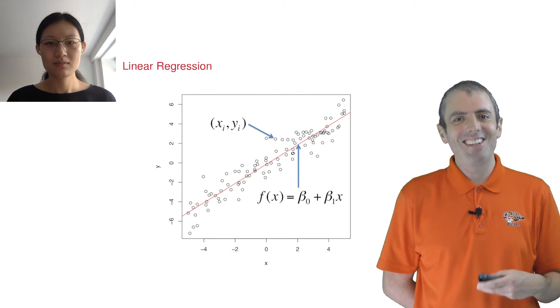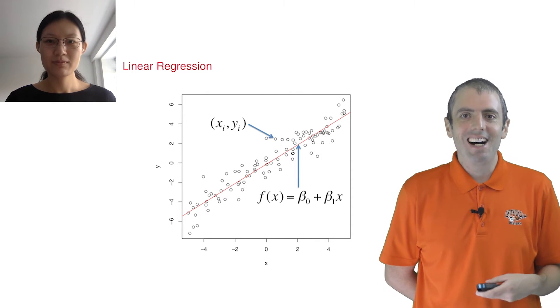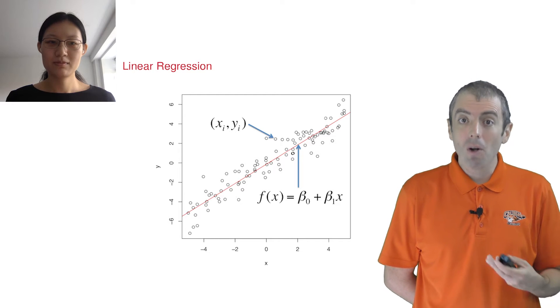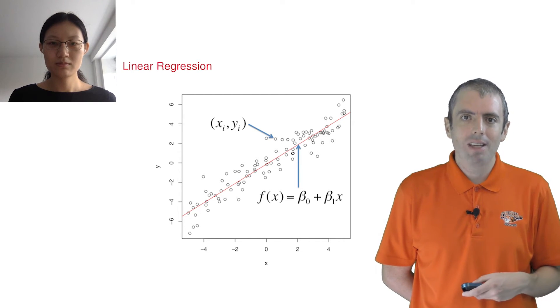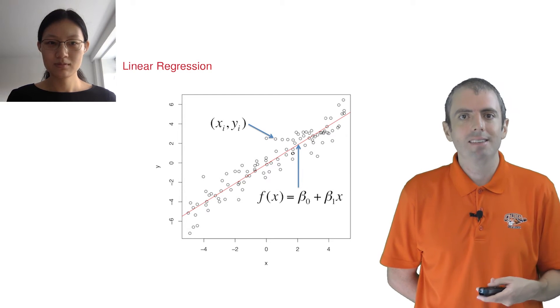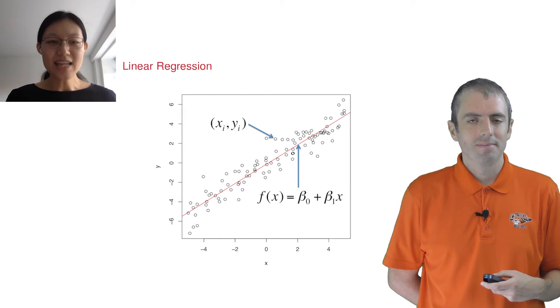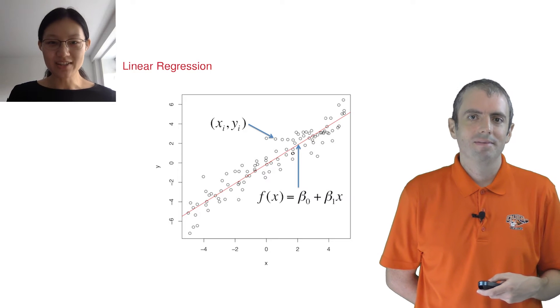Okay, so it looks like we have an intercept term, beta-naught, plus a linear term that's multiplied by the input x. For this one-dimensional case, it's a line mapping your x's to your y's. Exactly. This is called a regression line.